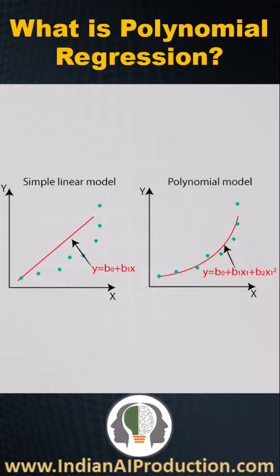In the left side diagram you can see the data set is non-linear, so the linear regression model is not working very well. In this scenario, we take degree 2 of feature x1, and then you can see the polynomial regression model is working very well for the given data set.